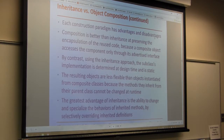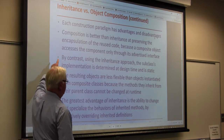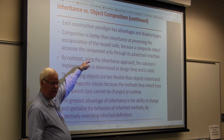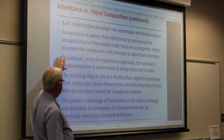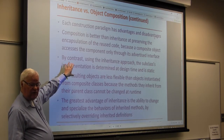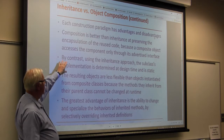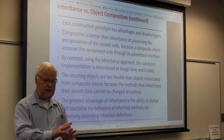Composition is better than inheritance at preserving the encapsulation of the reused code. In composition we don't have to change the code, because a composite object accesses the component only through its advertised interface. By contrast, with inheritance the subclass's implementation is determined at design time and is static. Inheritance is good if you design it from the beginning because whatever you said it is, that's what it is.